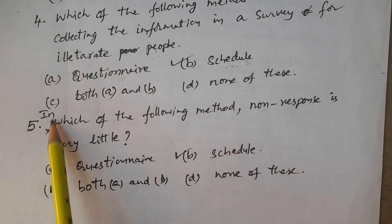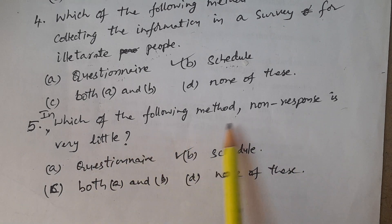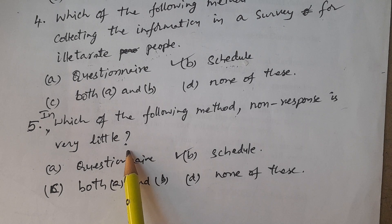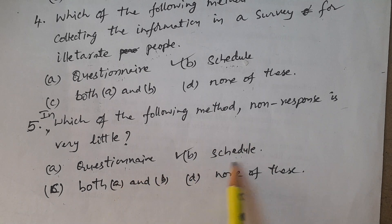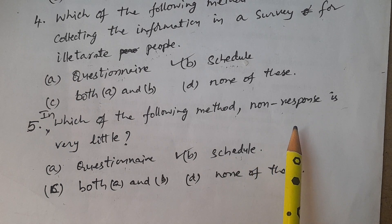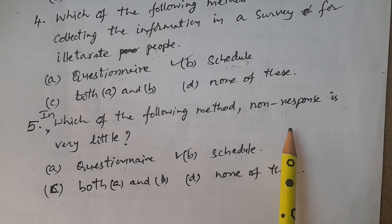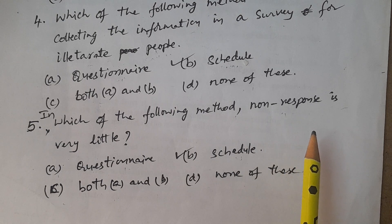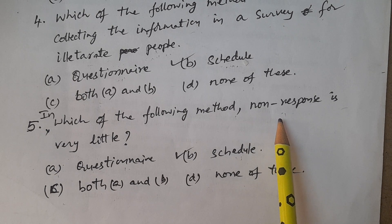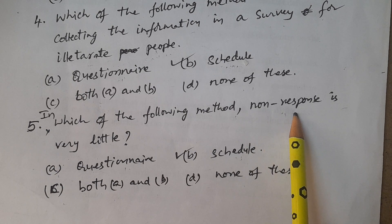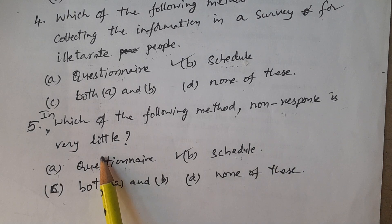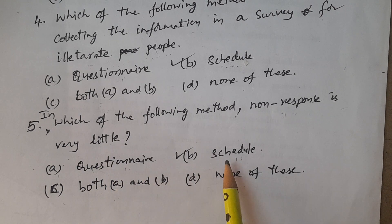Fifth question: in which of the following methods is non-response very little? Options: A. Questionnaire, B. Schedule, C. Both A and B, D. None. Non-response means not getting a response — even after visiting the respondent's house frequently, the respondent is not there or refuses to give information. The answer is schedule.